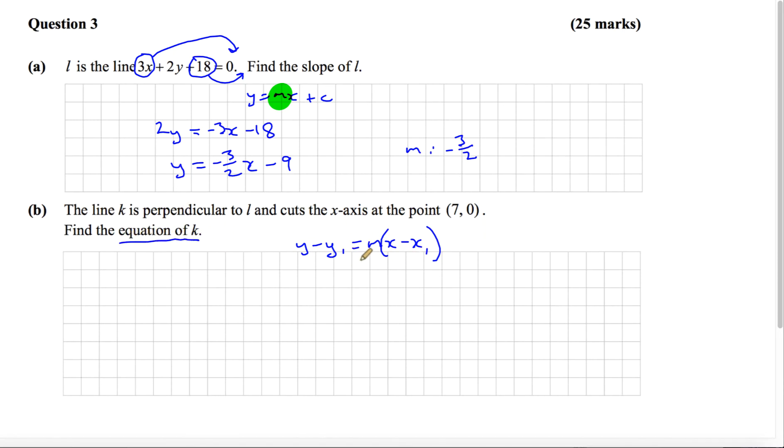To find the equation of k, we're going to need the slope, and then we're going to need x1 and y1, so we need a point on the line and the slope of the line.